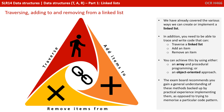We've already covered the various ways we can create or implement a linked list. In addition, you need to be able to trace and write code that can traverse a linked list, add an item, and remove an item. You can achieve this by using either an array and procedural programming or an object-oriented approach. The exam board recommends you gain a general understanding of these methods backed by practical experience implementing them, as opposed to trying to memorise any particular code pattern.